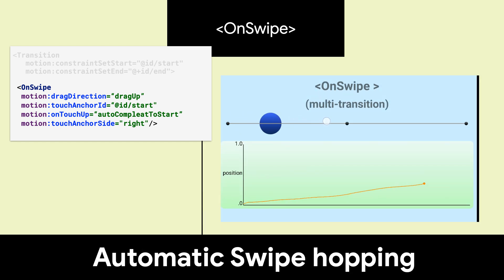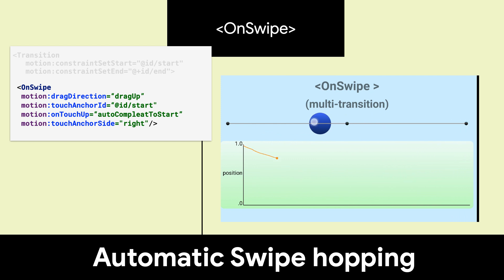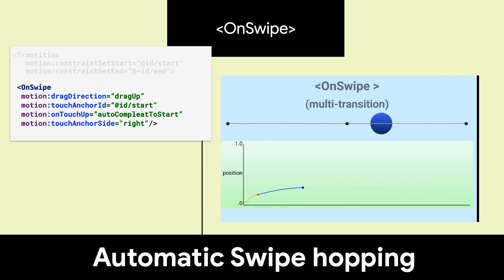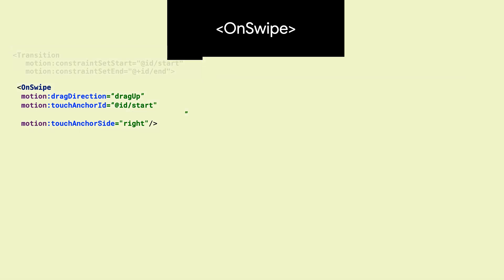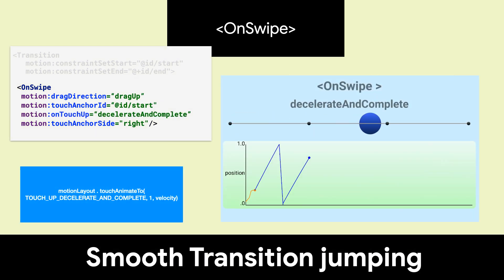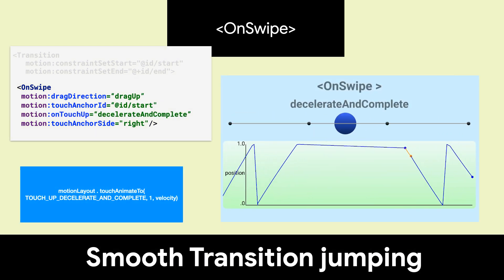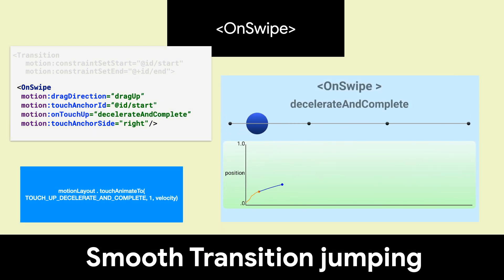Another powerful feature is that two or more transitions will naturally continue if you reach a constraint set and there are other transitions leading away. You'll be automatically hopped to them without having to lift your finger. With decelerate and complete and a little bit of code, you can even flick across multiple transitions.